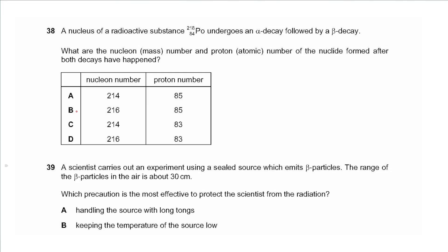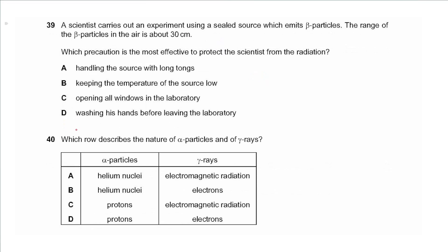Question 38 says the nucleus of radioactive substance Po-218 undergoes alpha decay followed by beta decay. What are the nucleon number and proton number after both decays? The proton number decreases by 2 for alpha decay then increases by 1 for beta decay — a total change of minus one, giving 84 minus 1 equals 83. The nucleon number decreases by 4 for alpha decay only, so 218 minus 4 equals 214. The answer is C.